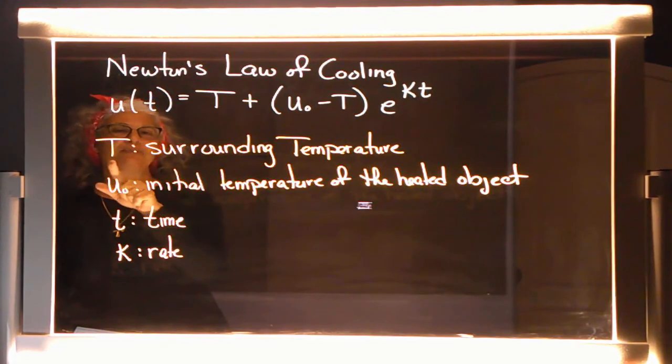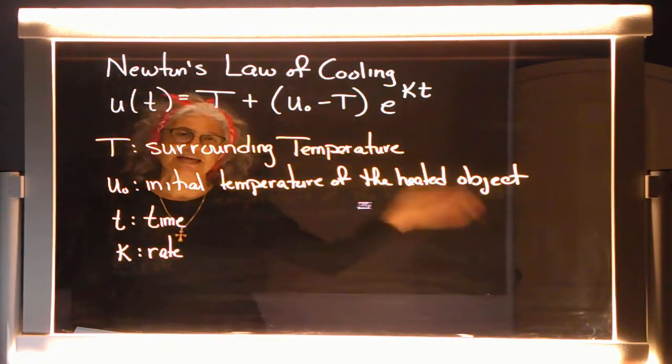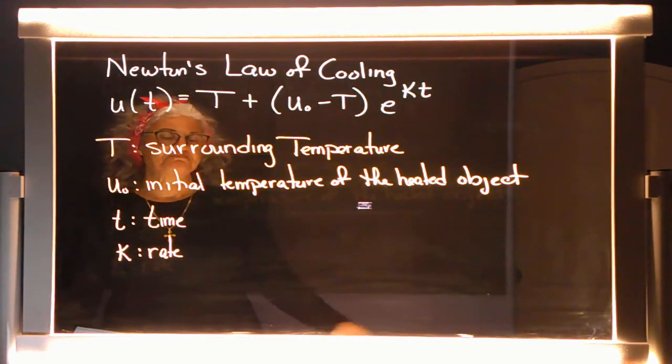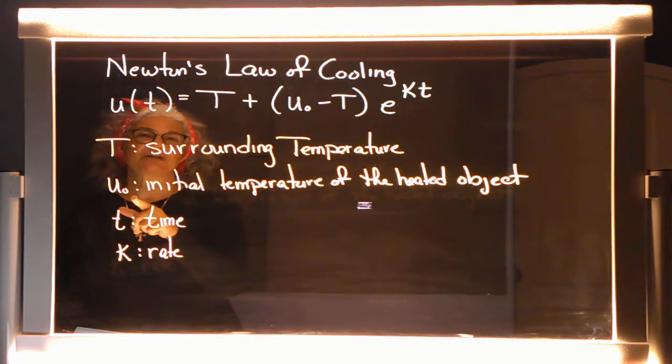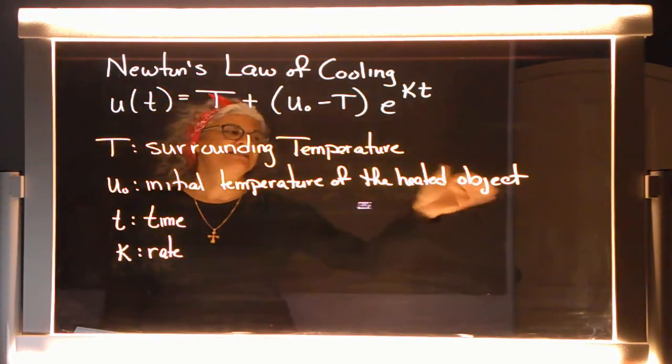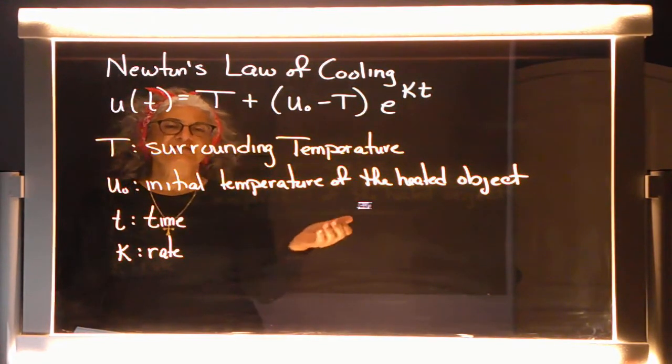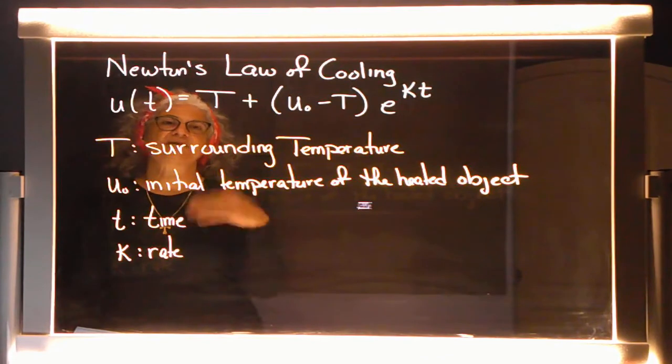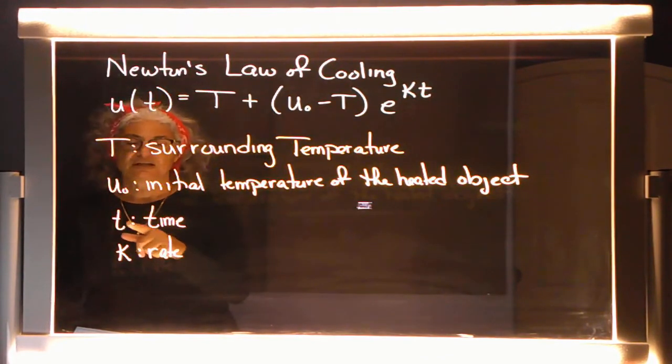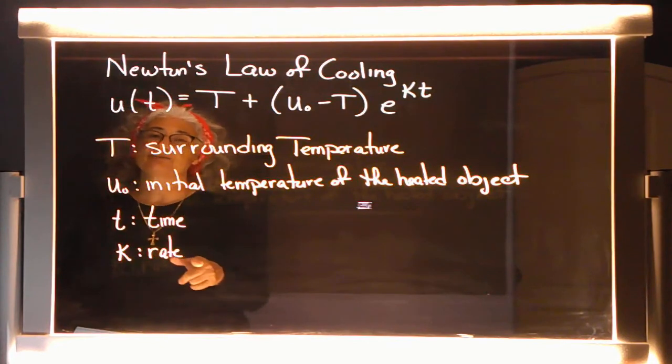So here's Newton's Law of Cooling. Now, I know it looks like a very interesting formula, but it's kind of a lot of fun. So first off, capital T stands for the surrounding temperature. U sub-zero, anytime we see a sub-zero, it's the initial amount - the initial temperature of the heated object. T is time, time could be any units. And K is the rate.